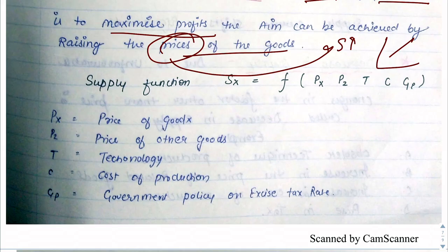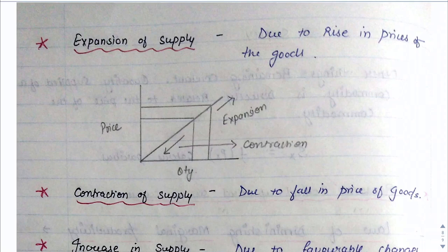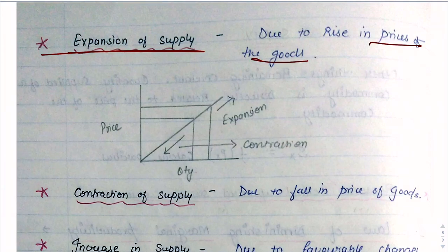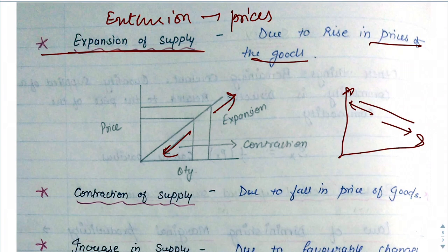The supply function depends on various variables: the price of good X, price of good Y, technology, cost of production, and any government policy or subsidy. Just as demand had extension/contraction and increase/decrease, supply has the same. Expansion of supply happens due to price — when price increases, supply increases. Contraction happens when price decreases, supply also decreases. These movements are along the same supply curve.